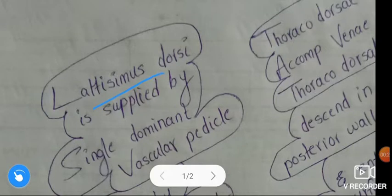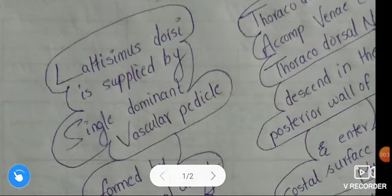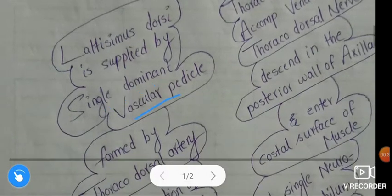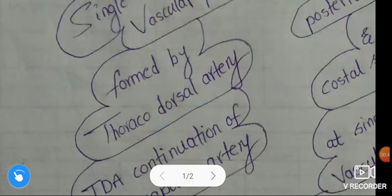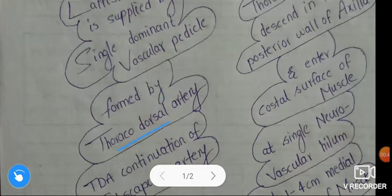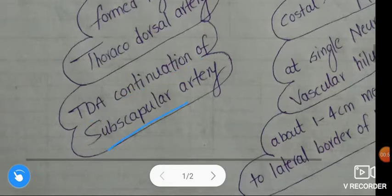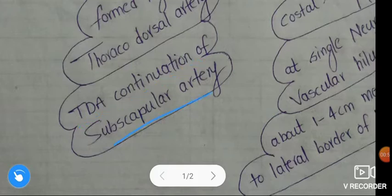The Latissimus Dorsi is supplied by a Single Dominant Vascular Pedicle, and this Single Dominant Vascular Pedicle is formed from the Thoracodorsal Artery. This Thoracodorsal Artery is a continuation of the Subscapular Artery.